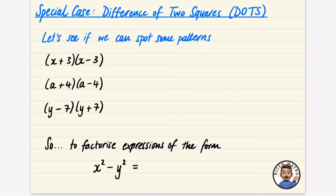In this video we're going to be looking at a special case of factorizing called the difference of two squares, which I often simplify to DOTS. We're going to see if we can spot some patterns.